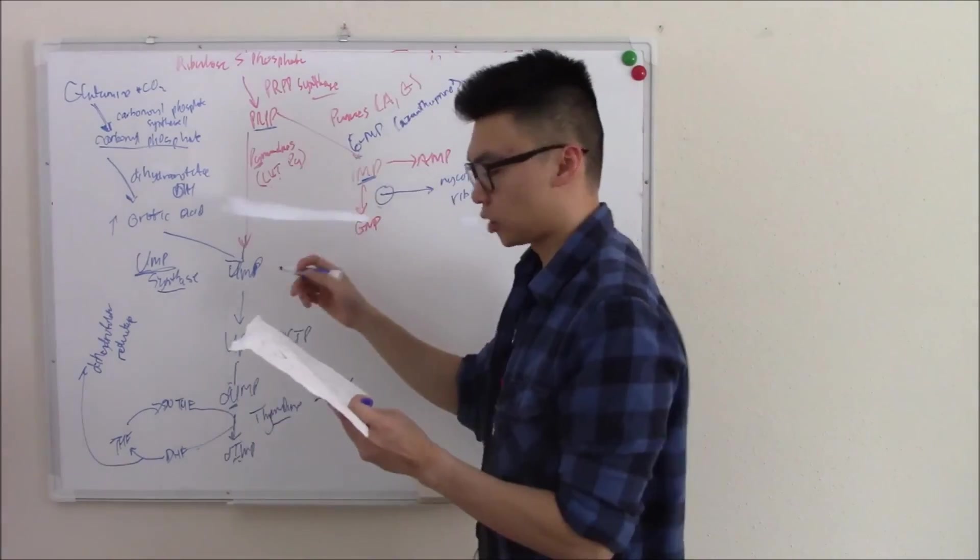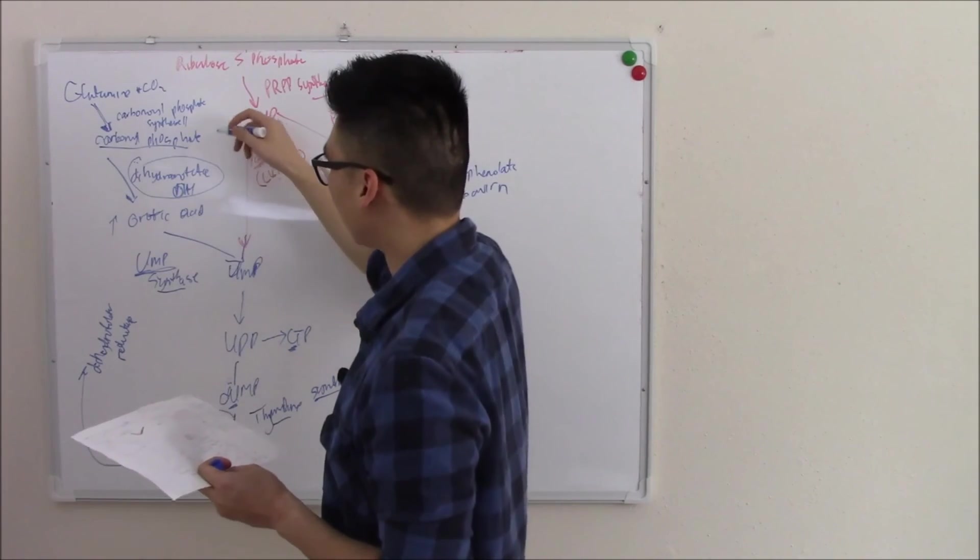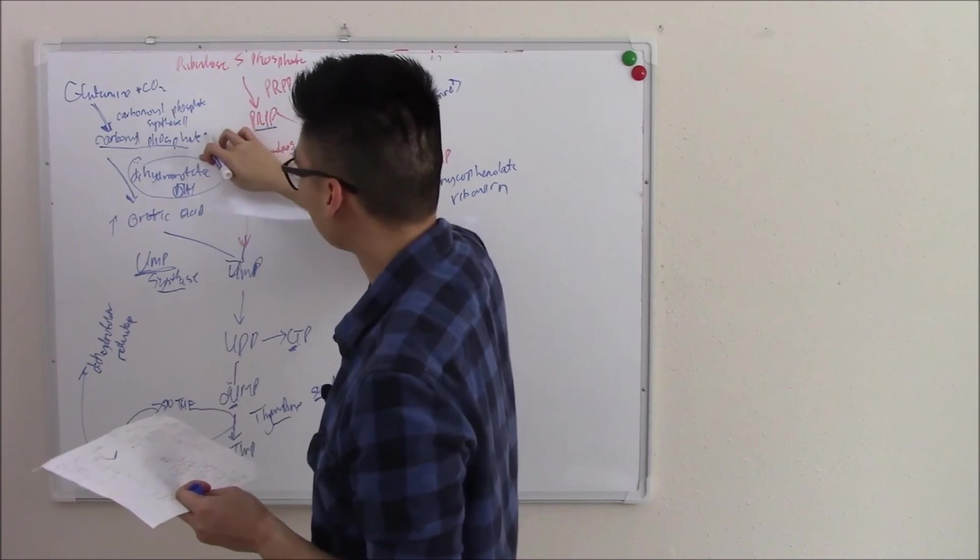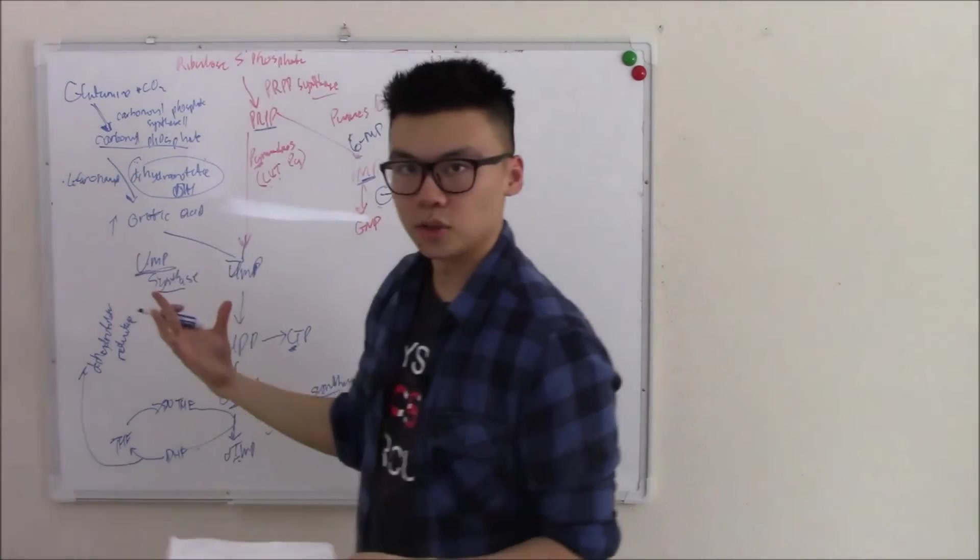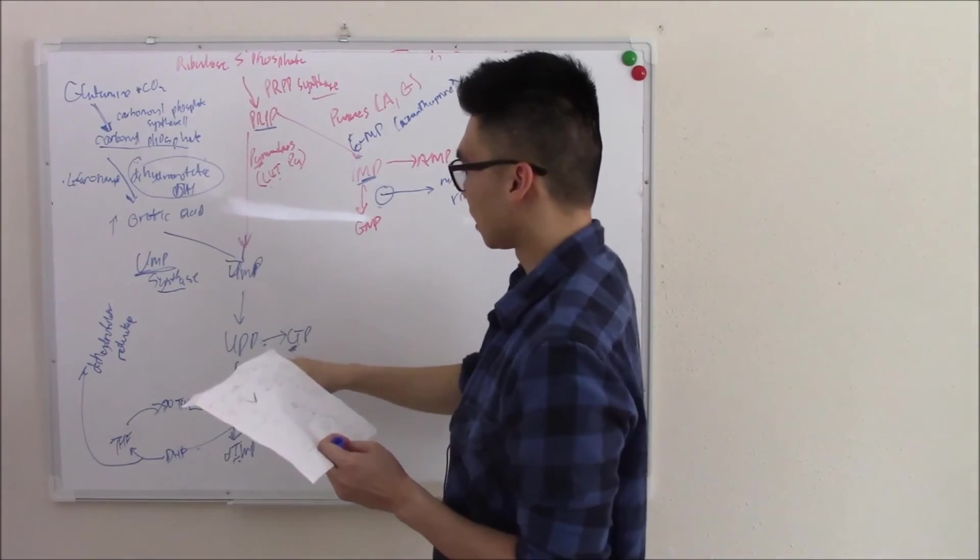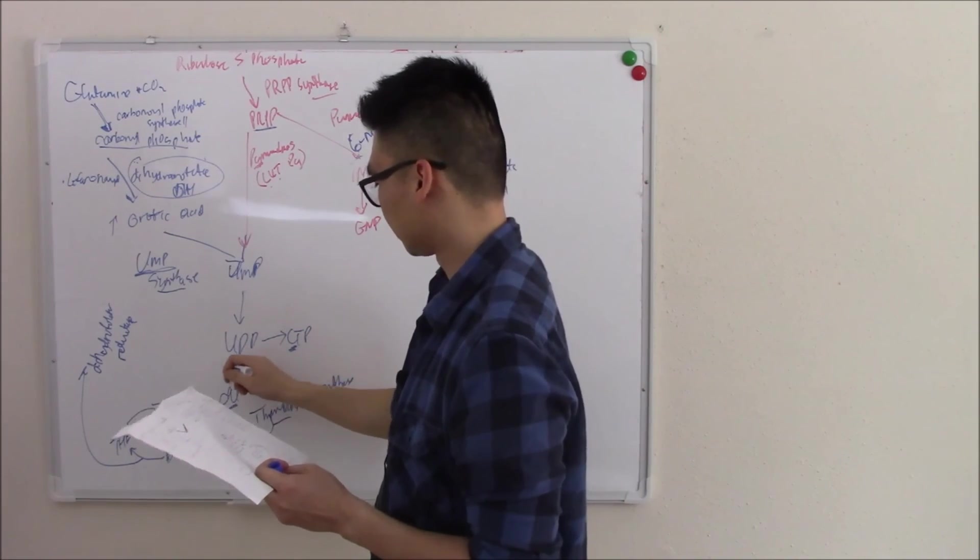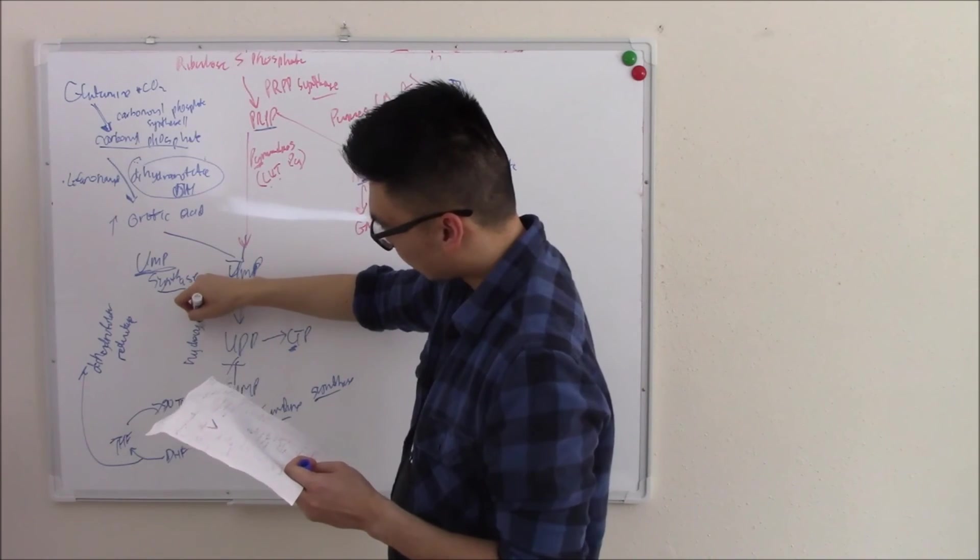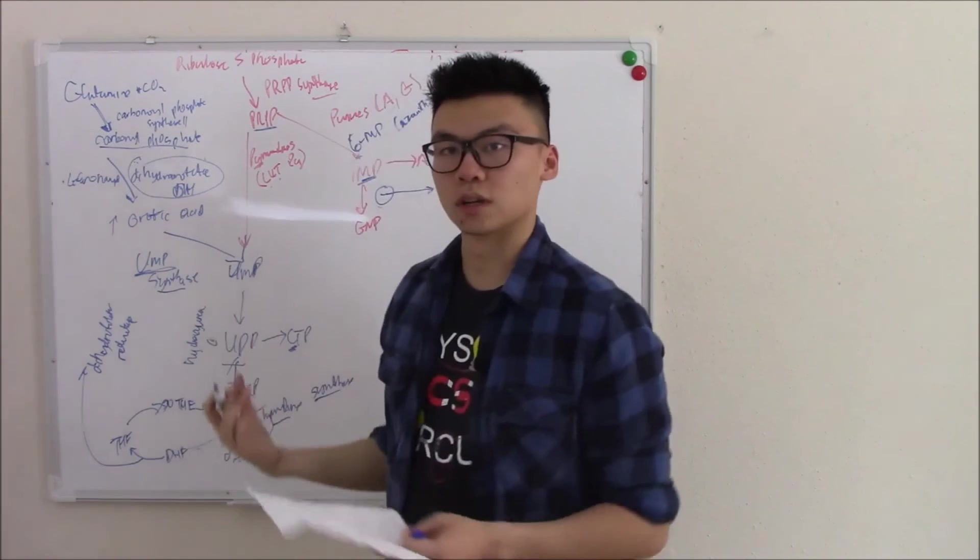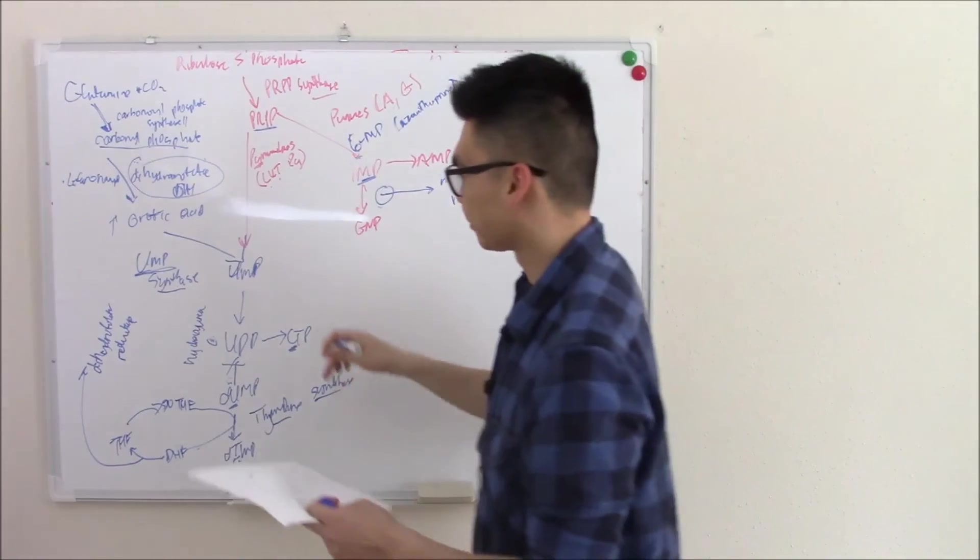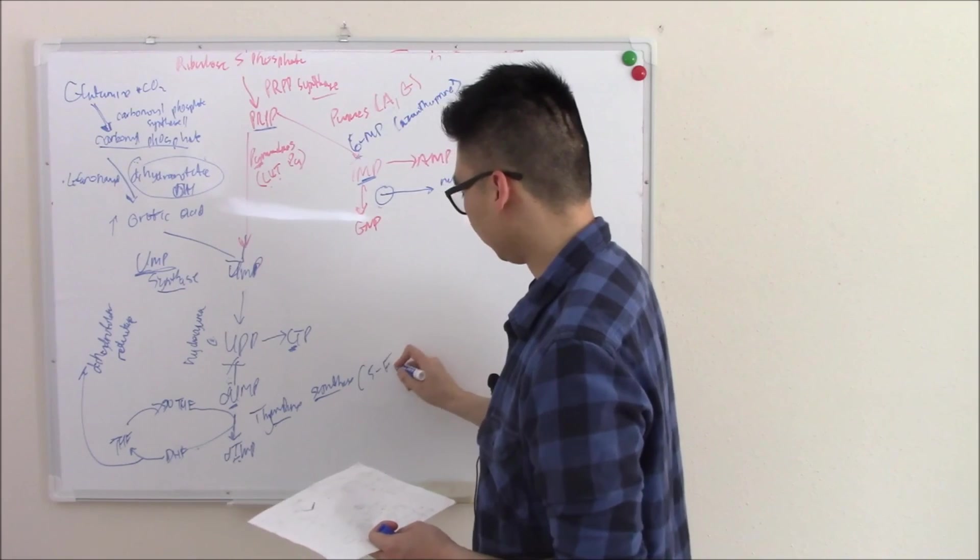Your pyrimidines, you can block this enzyme dihydroorotate dehydrogenase by a drug called leflunomide. That's just an immunosuppressant. We can work our way down. Stop UDP from converting into dUMP or dTMP by a drug called hydroxyurea, which is a chemo drug. If you're having trouble reading this, they'll all be in my notes. Don't worry about that. Thymidylate synthase can be inhibited by 5-FU, the chemo drug.